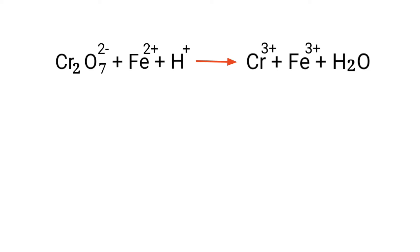First, identify the reducing and oxidizing agents by the rules of assigning oxidation numbers. In the ion electron method, one reaction is divided into two half reactions, which are then balanced and added together.